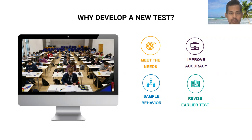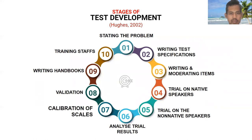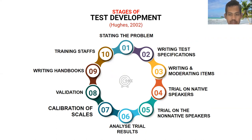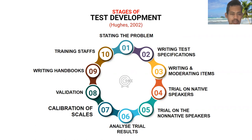Now, how do we develop a test? What are the stages of test development? According to Hughes (2002), there are at least 10 stages. The first is stating the problem, then writing test specifications, third is writing and moderating items, fourth is trial on native speakers, fifth is trial on non-native speakers, sixth is analyzing trial results, seventh is calibration of scales, eighth is validation, ninth is writing handbooks, and the last is training staff.